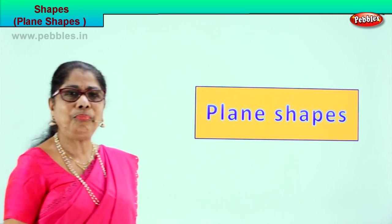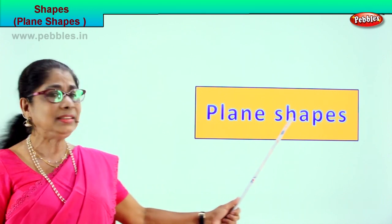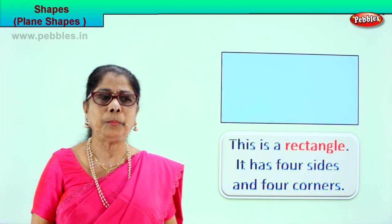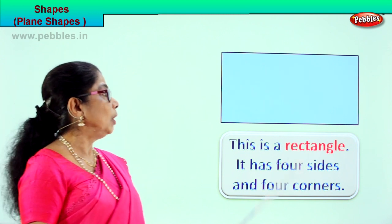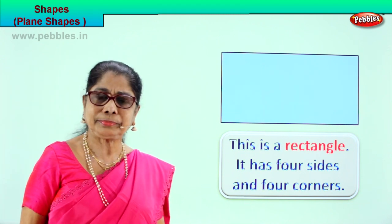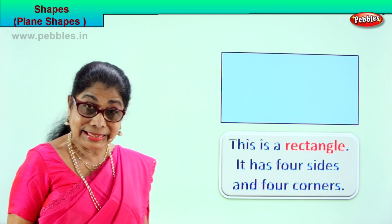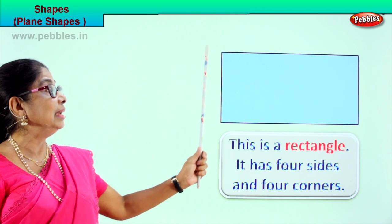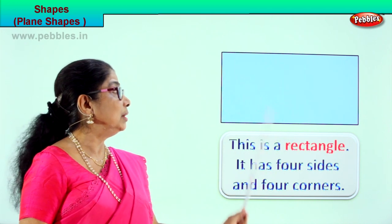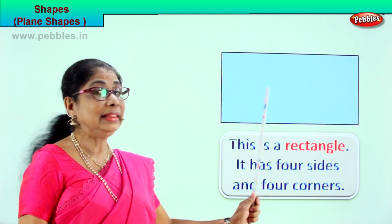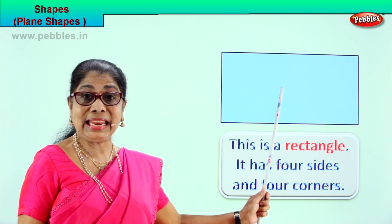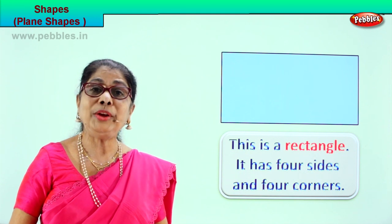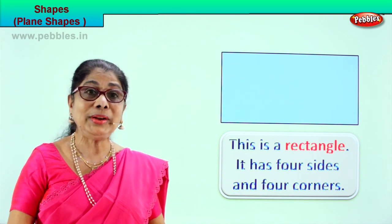Alright! Let's take the first plain shape. What shape is this? Very good — this is a rectangle. It has two long sides and two short sides. This is a plain shape. Rectangle. At home, where do you see a rectangle? Your table.